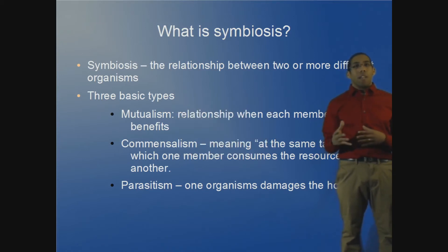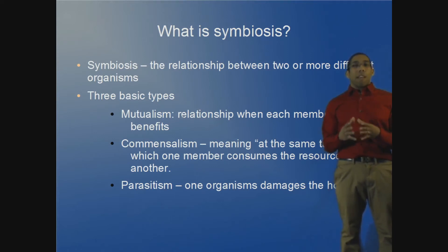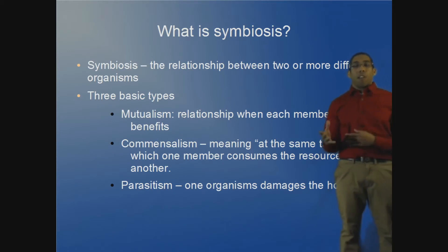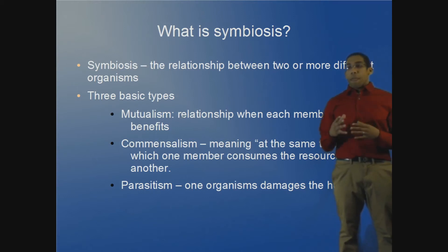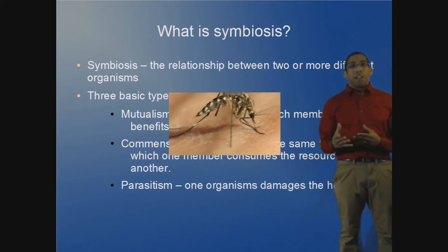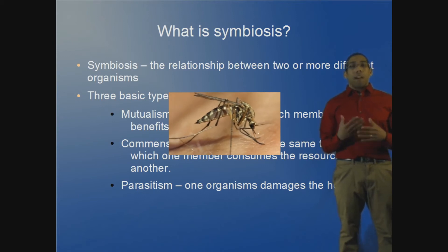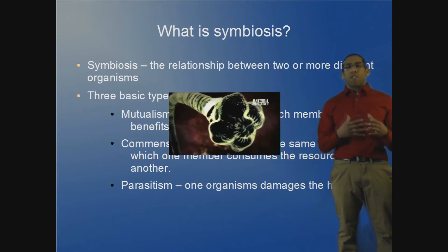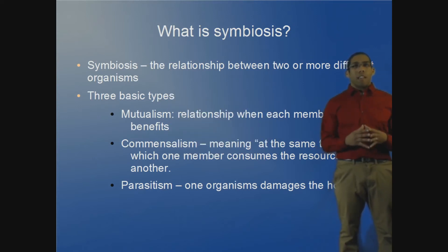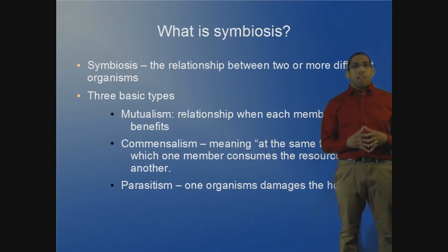The last category of symbiosis, and the one most people are probably familiar with, is parasitism, where one organism benefits at the expense of the other. For instance, a mosquito will feed on a human for blood and nutrition, or you have a tapeworm that does the same thing. There are many other examples of parasitism all over the animal kingdom.